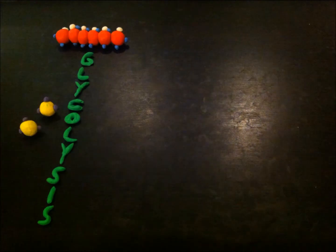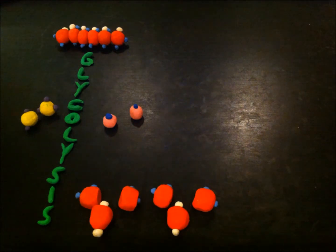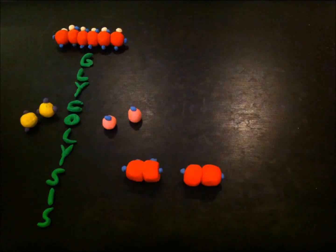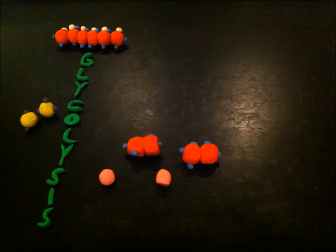Glucose undergoes glycolysis as normally, producing 2 ATP, 2 NADH, and 2 pyruvate molecules. Since not enough oxygen is present, pyruvate will cleave off CO2. These acetyl aldehyde molecules will oxidize NADH becoming ethanol. The NAD-positive will then re-enter glycolysis.